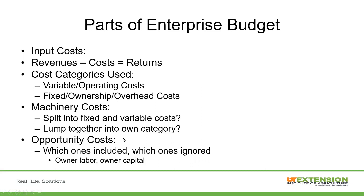Another cost that we use, especially with our UT budgets — not all university budgets will have this included — is the opportunity cost. The opportunity cost we include is also the owner labor. Oftentimes when farmers are planning or looking over costs and expenses for the year, they kind of leave out their labor costs. We feel this is an opportunity cost that needs to be included to make sure that owner is getting paid and to determine the true cost of that enterprise.